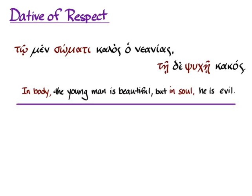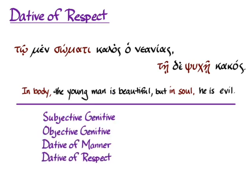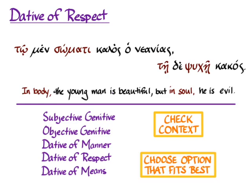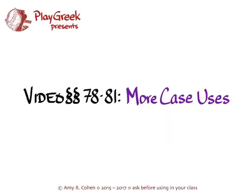So for these new case uses — subjective genitive, objective genitive, dative of manner, dative of respect, and of course dative of means — what you really need to do is look at the context, see what nouns you're dealing with, and then choose the translation that makes the most sense of that context and best reflects it in English idiom. That's more case uses to add to your list of options, and hopefully you'll get good practice with the sentences and drills in Hanson and Quinn.